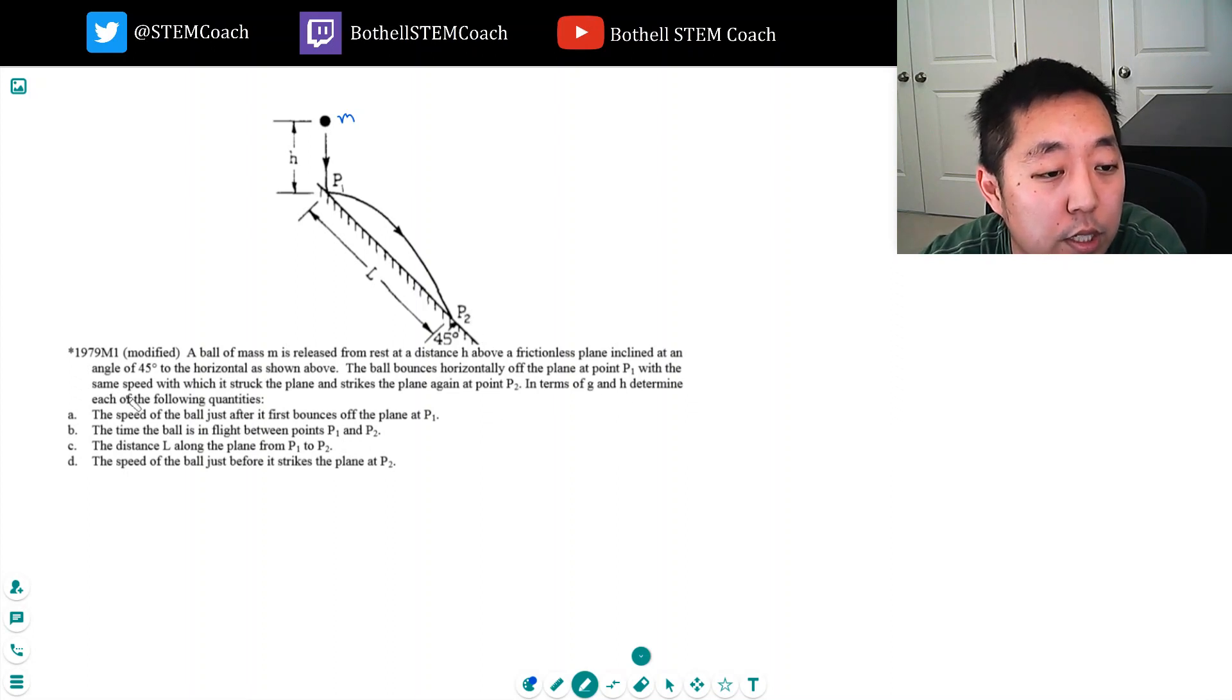In terms of g and h, determine each of the following: the speed of the ball just after it first bounces off. Okay, there's actually a couple ways you can do this through energy, but if I wanted to just do this straight off through kinematic equations, I would say this equation makes sense because I have the height, I know the initial velocity.